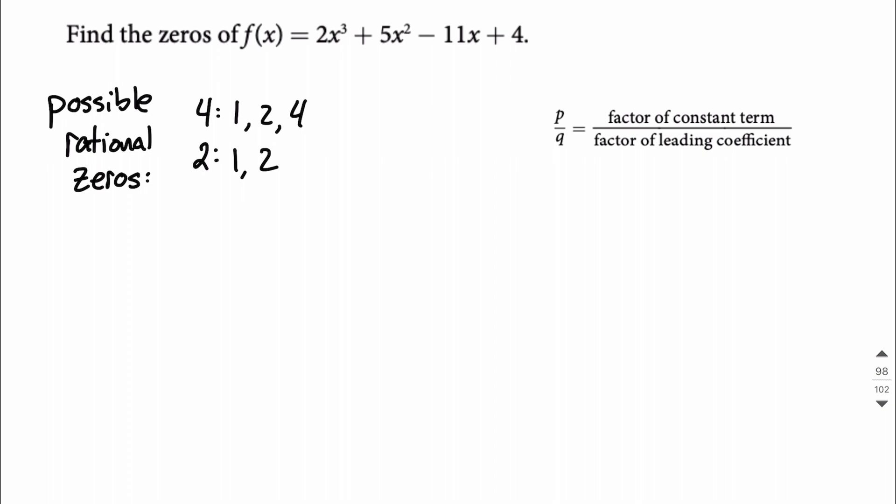Next, all the possible rational zeros are going to be either positive or negative of these fractions. We can do 1 over 1, we can do 2 over 1, or 4 over 1.